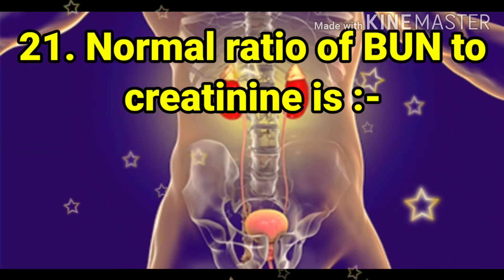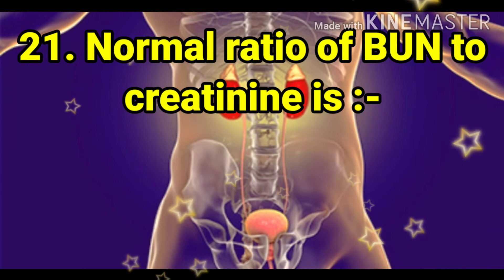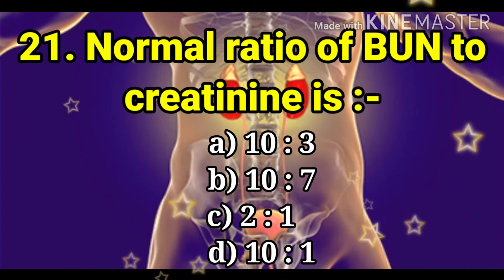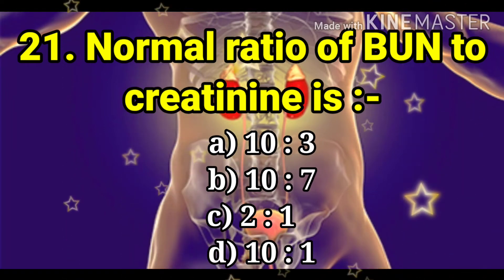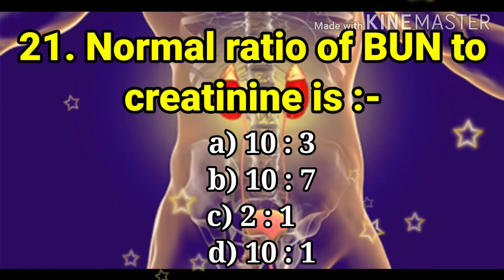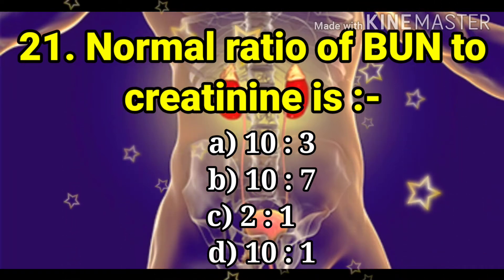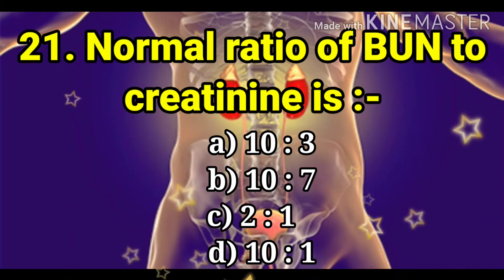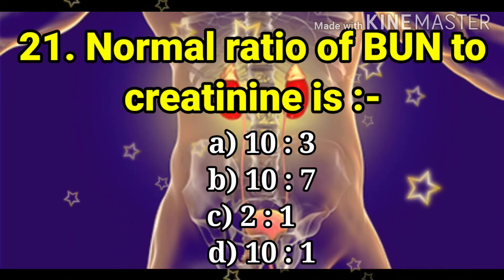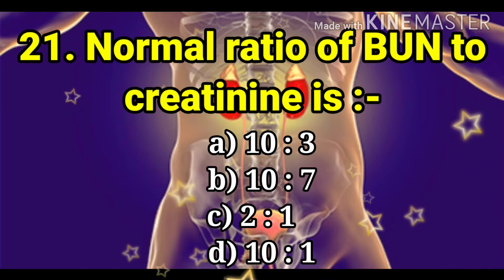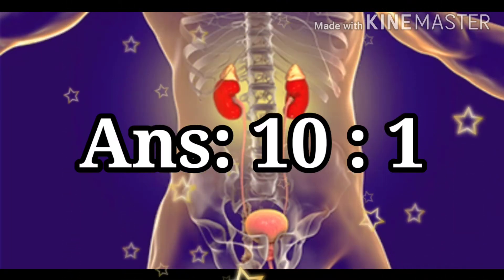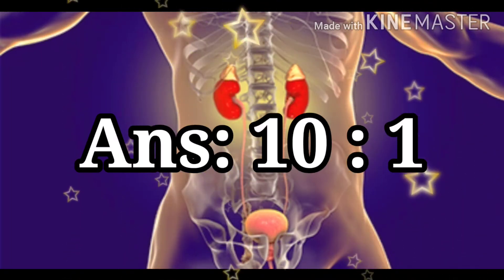Next question: the normal ratio of blood urea nitrogen to creatinine. The options are 10:3, 10:7, 2:1, and 10:1. The answer is 10:1.